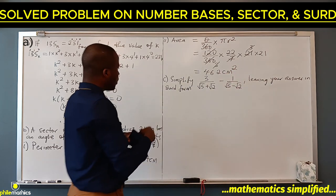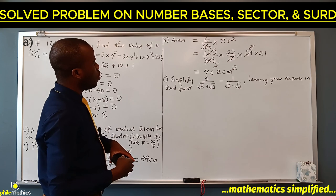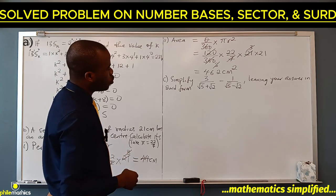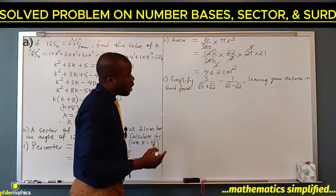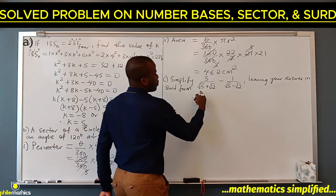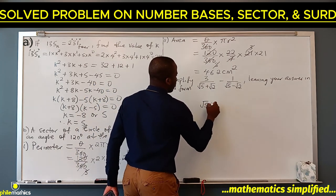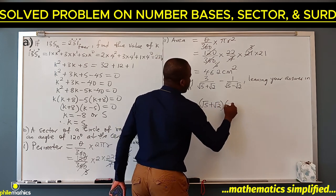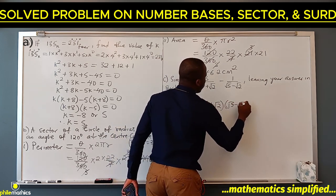Part c: simplify 3 over (root 5 plus root 2) minus 1 over (root 5 minus root 2). We treat this as a normal algebraic simplification. The LCM of the denominators is (root 5 plus root 2)(root 5 minus root 2).